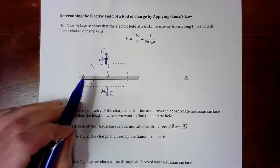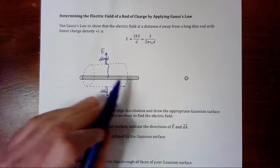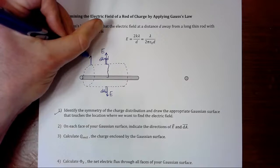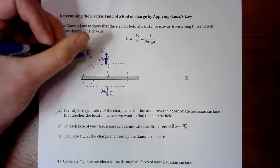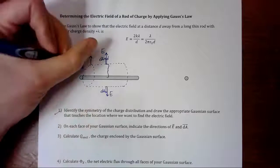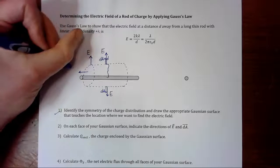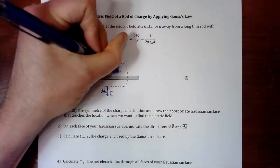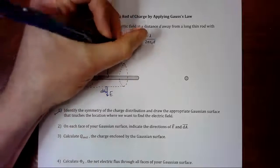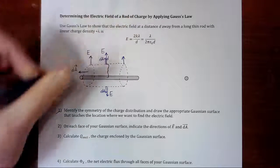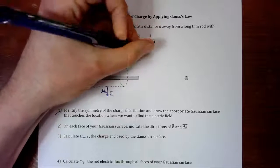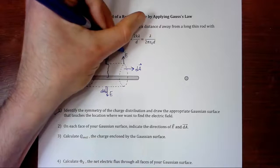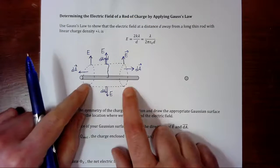We have two other parts of our Gaussian surface, we have the left cap and the right cap. On the left cap, the electric field is also upwards, but the area vector for the left cap is outwards. And then same thing for the right-hand cap, the electric field points out but the area vector points out. That means that there's zero flux through the left cap and the right cap.